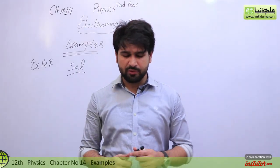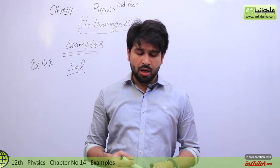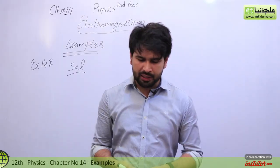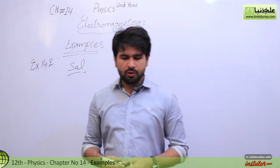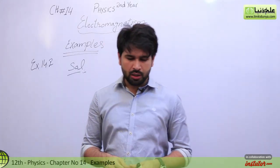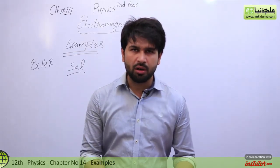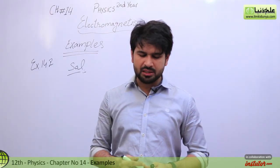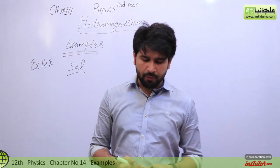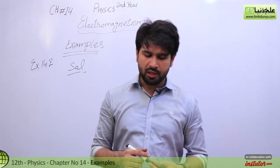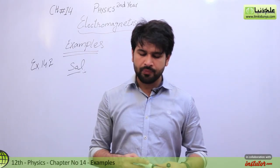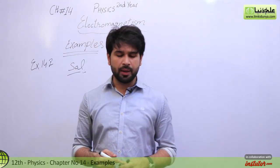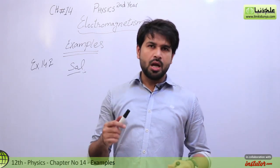The magnetic field in vector form is 40 î minus 18 k̂ Weber per meter square — this is another unit of magnetic field. How much flux passes through a 5.0 centimeter square area loop in this region if the loop lies flat in the xy-plane?